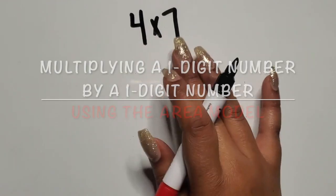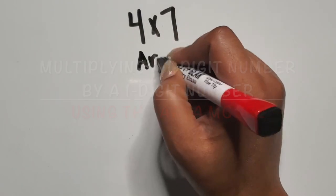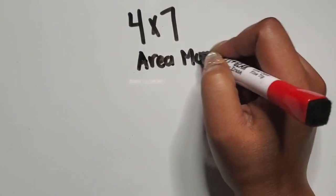We are going to multiply one digit number by another one digit number using the area model without the grid.